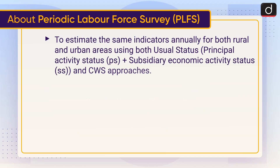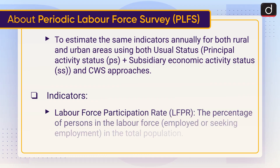Another objective is to estimate the same indicators annually for both rural and urban areas using both usual status — principal activity status plus subsidiary economic activity status — and current weekly status approaches.